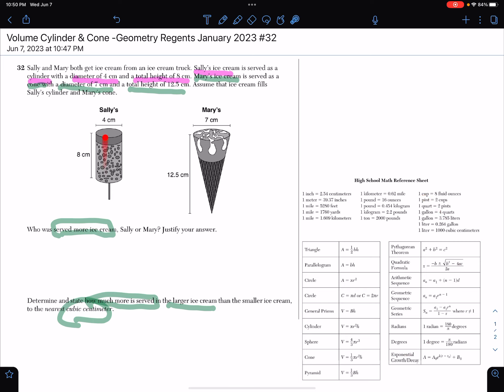Sally's shape is a cylinder. You look for the formula and it says the volume of a cylinder is πr²h. Mary's figure was also mentioned as a cone. The volume of the cone is (1/3)πr²h.